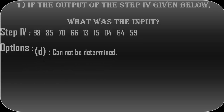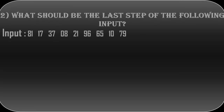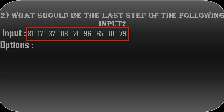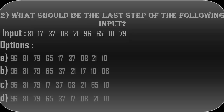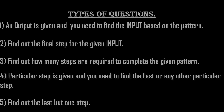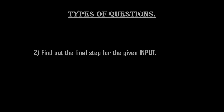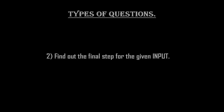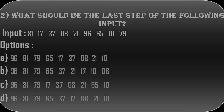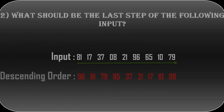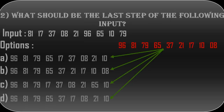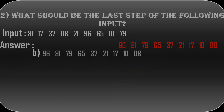If any middle step is given, we cannot determine the input based on the pattern. The second question asks: what should be the last step for the following input? This is the second type of question and also one of the easiest. Since we know the pattern, to find the last step we don't have to write down all the steps — just arrange the numbers from the input in descending order and you have the answer. Matching with the options, B is the correct answer for the second question.